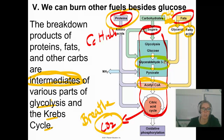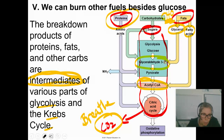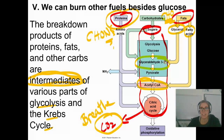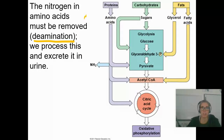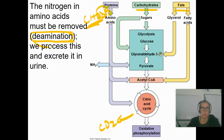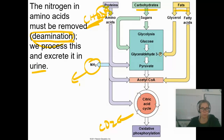How about proteins? Proteins aren't just carbon, hydrogen, and oxygen. Proteins are made out of carbon, hydrogen, oxygen, nitrogen, and sulfur. So what happens with the nitrogen? Well, you have to deaminate the amino acid — that's this word. You've got some nitrogen in the C-H-O-N-S structure.